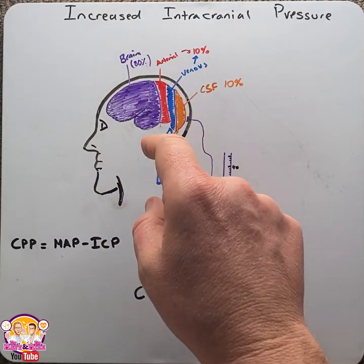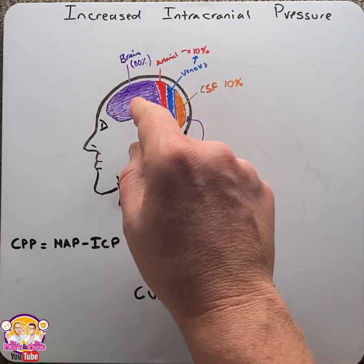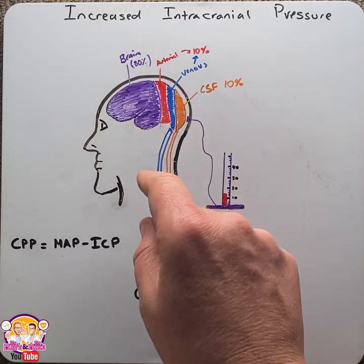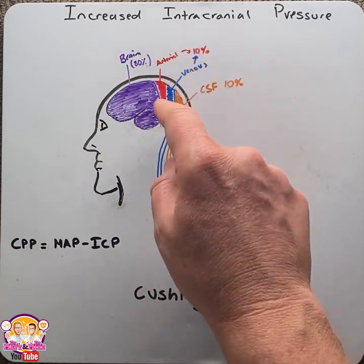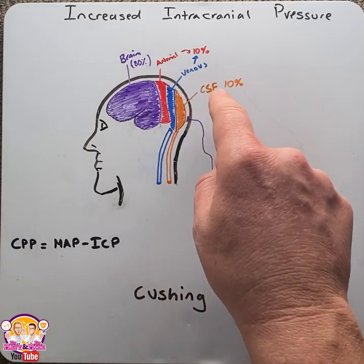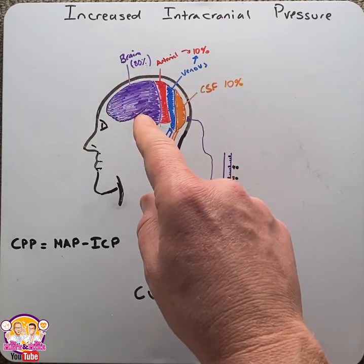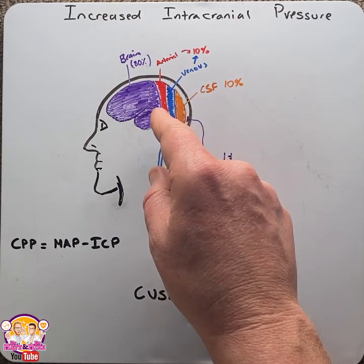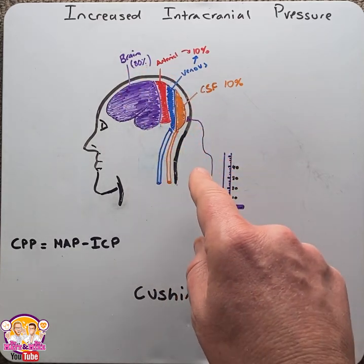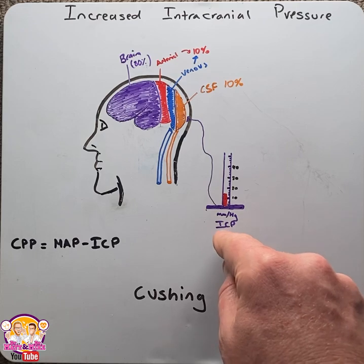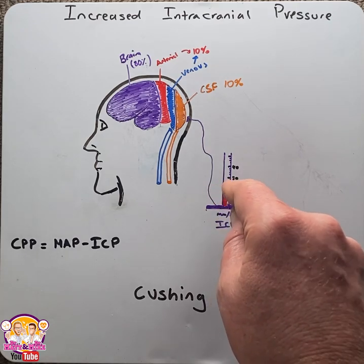The cranium is a rigid structure that contains three components: brain tissue, which makes up 80% of the cranial volume; blood, both arterial and venous, which makes up 10% of the cranial volume; and CSF, which makes up 10% of the cranial volume. The volume of these three structures place a modest pressure on the cranium, known as the intracranial pressure or ICP, which is normally 5 to 15 millimeters of mercury.